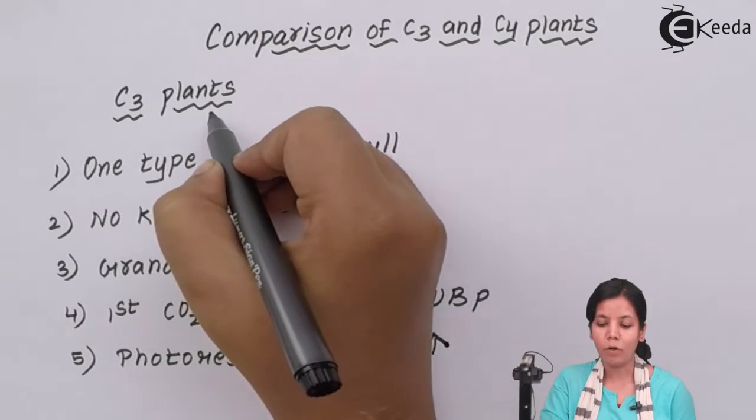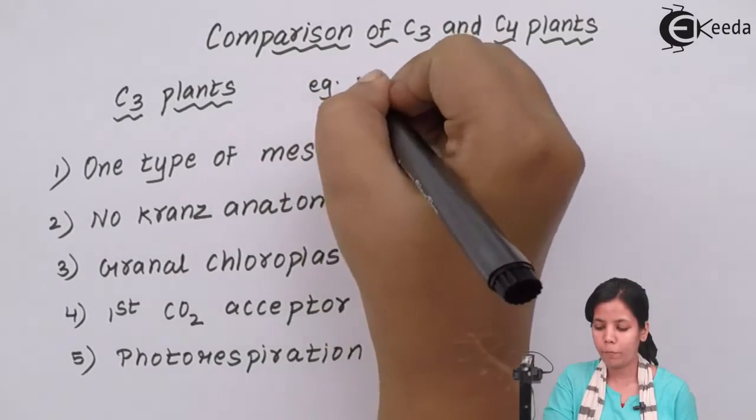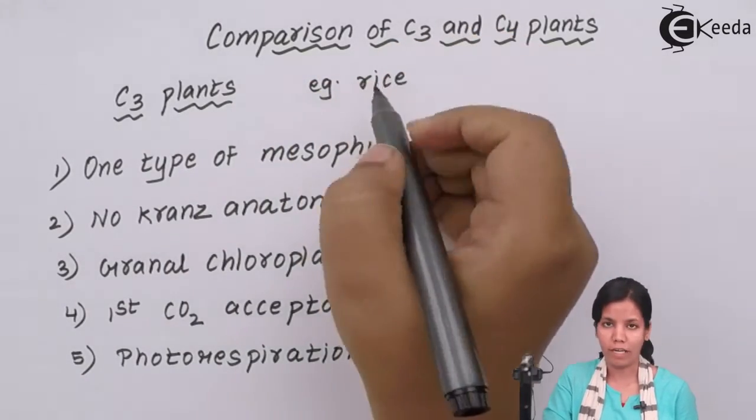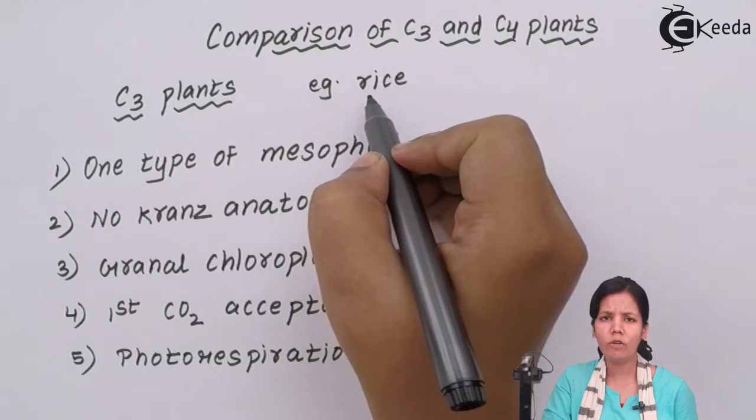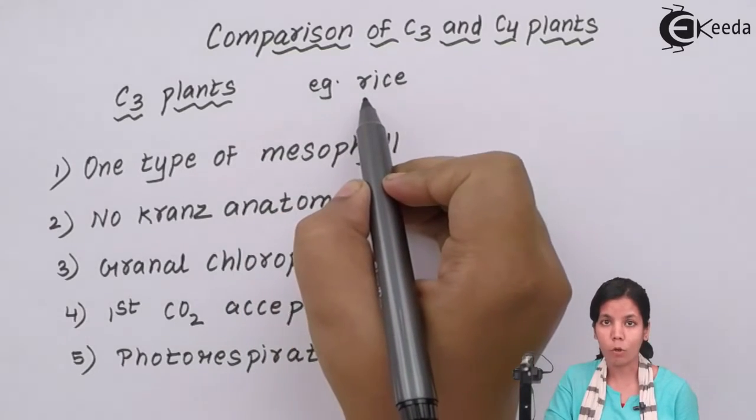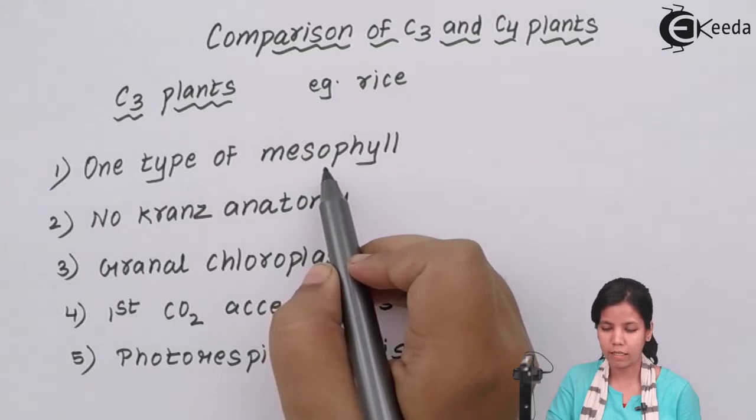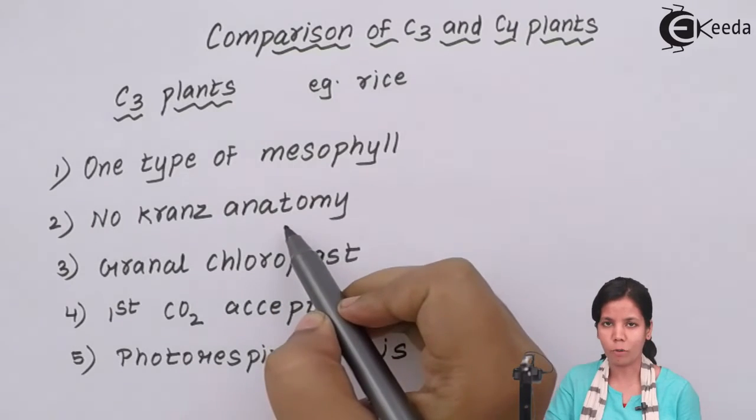C3 plants - an example of C3 plants would be rice which grows in normal temperature, which requires large amount of water and which can grow at lower temperatures in mild climatic conditions. Now to grow this rice or C3 plants they have one type of mesophyll cells. There is no Kranz anatomy present. There are no bundle sheath cells present.